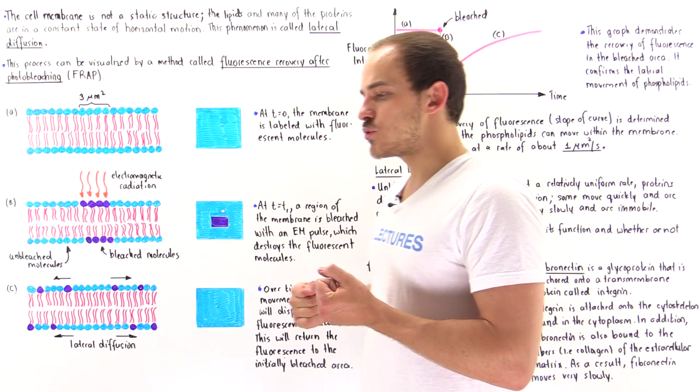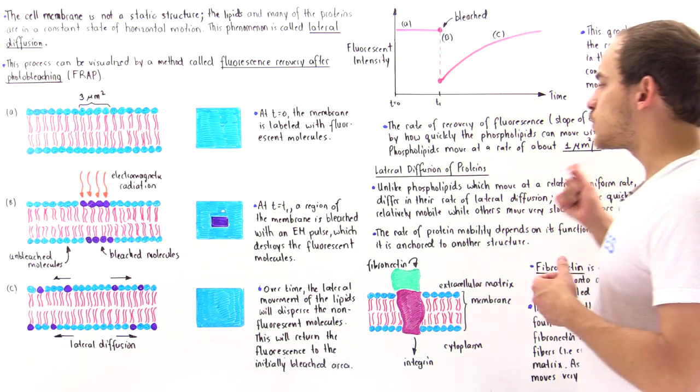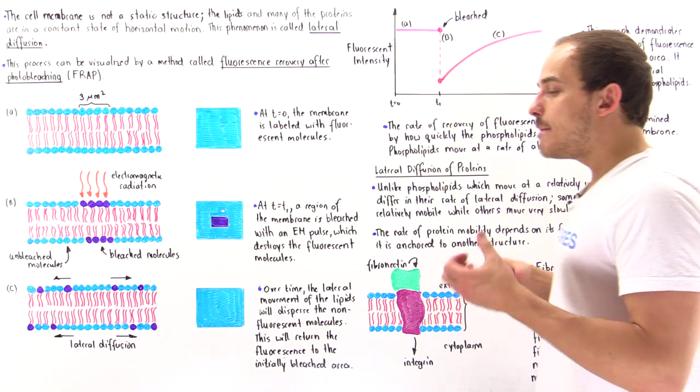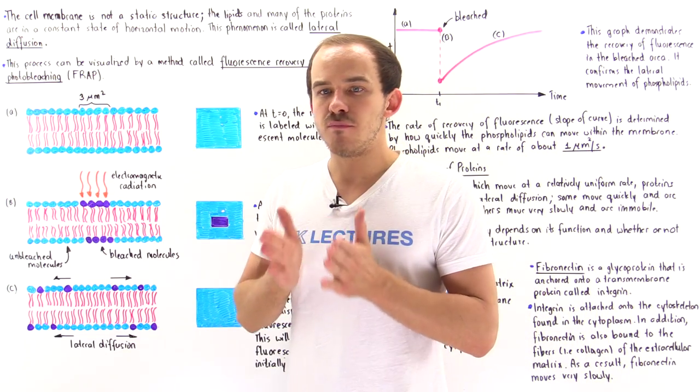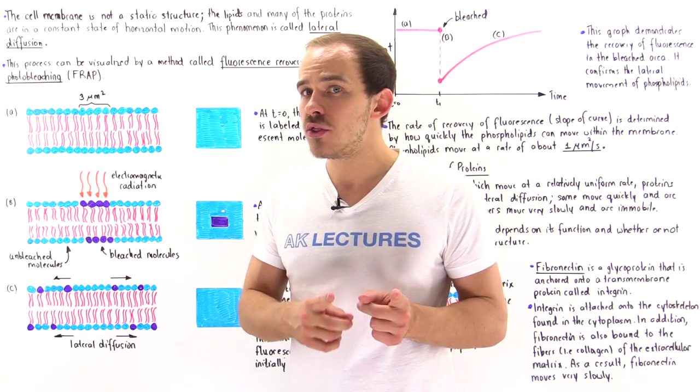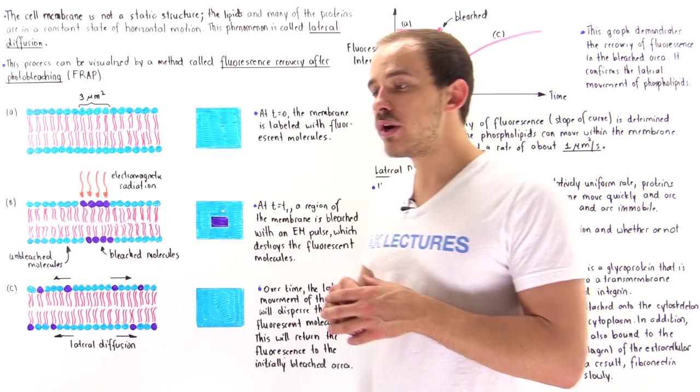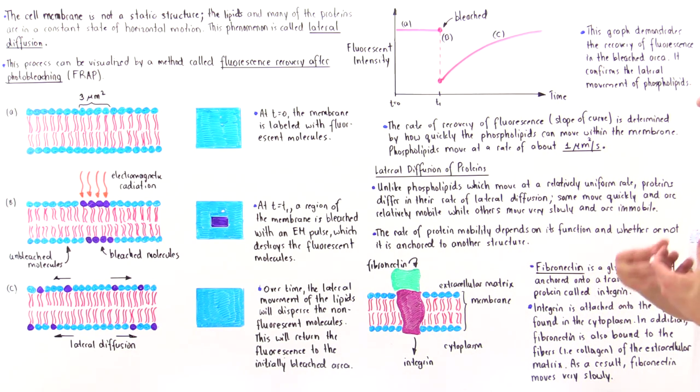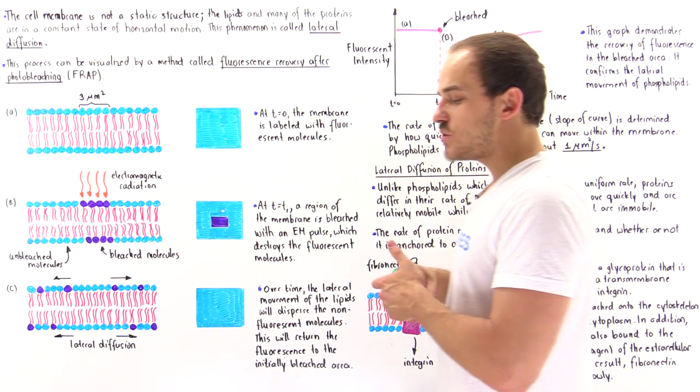Now, what about proteins? Well, unlike these phospholipids, which move at a relatively uniform rate of one micrometer squared per second, proteins vary in the rate of movement. Some are immobile. They move very slowly, while others move very quickly, and so are mobile. Now, what determines the mobility of these proteins?